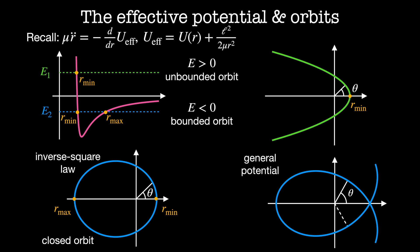Potentials that are not inverse square laws or Hooke potentials generally do not produce closed orbits. For a general potential, there may be many points of closest or furthest approach, and orbits typically do not repeat. For example, the orbit of Mercury isn't closed — the calculation of Mercury's precession was a clue that Newtonian gravity had problems. Eventually, general relativity explained the observed orbits of Mercury and other planets, as well as objects near black holes.